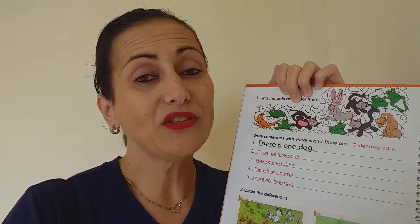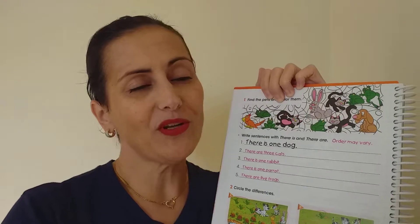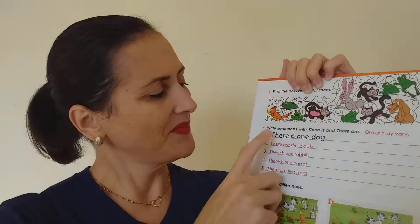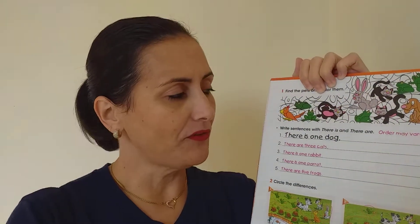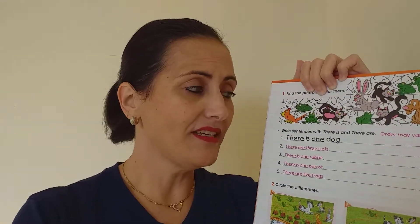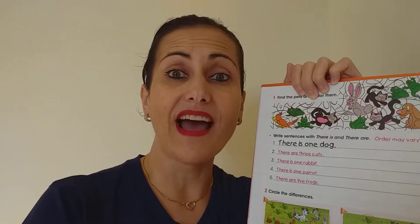Você vai procurar todos os pets and color. Pode escolher a cor que você quiser. Write the sentences with there is and there are.